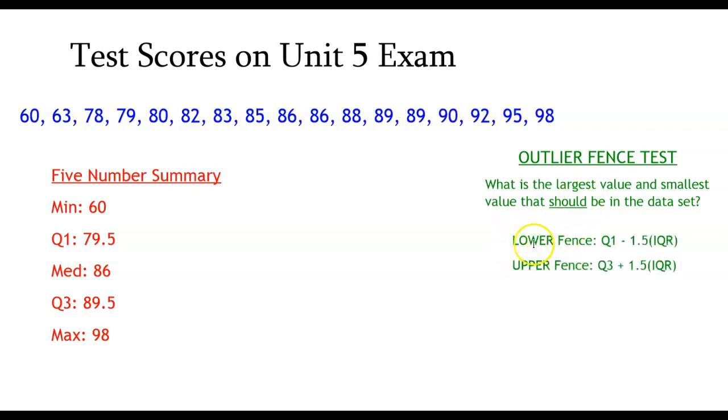The lower fence, or in other words, the smallest value that should be in the data set is quartile one, whatever the value of quartile one happens to be, minus one and a half times the IQR. IQR is a value that is otherwise known as the interquartile range. I'll show you to get that in a moment. And then the upper fence is simply quartile three, whatever the quartile three happens to be, plus 1.5 times the IQR.